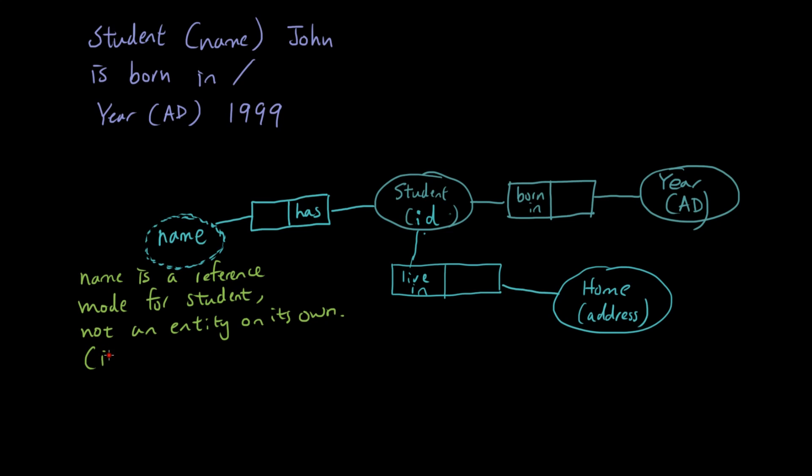So it's a value. Alright, so that's why you would use a dotted notation for the name. So student has name, student lives in home, student was born in year.